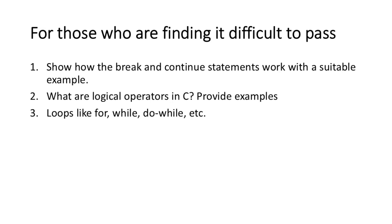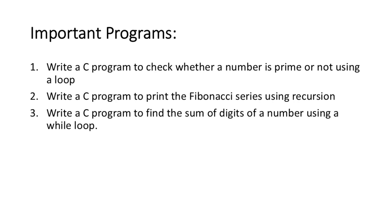For those who are finding it difficult to pass, focus on these key questions from Module 2. These will 100% help you pass: Show how the break and continue statements work with a suitable example. What are logical operators in C — provide examples. Understand loops like for, while, and do-while. Important Programs: Write a C program to check whether a number is prime or not using a loop. Write a C program to print the Fibonacci series using recursion. Write a C program to find the sum of digits of a number using a while loop.